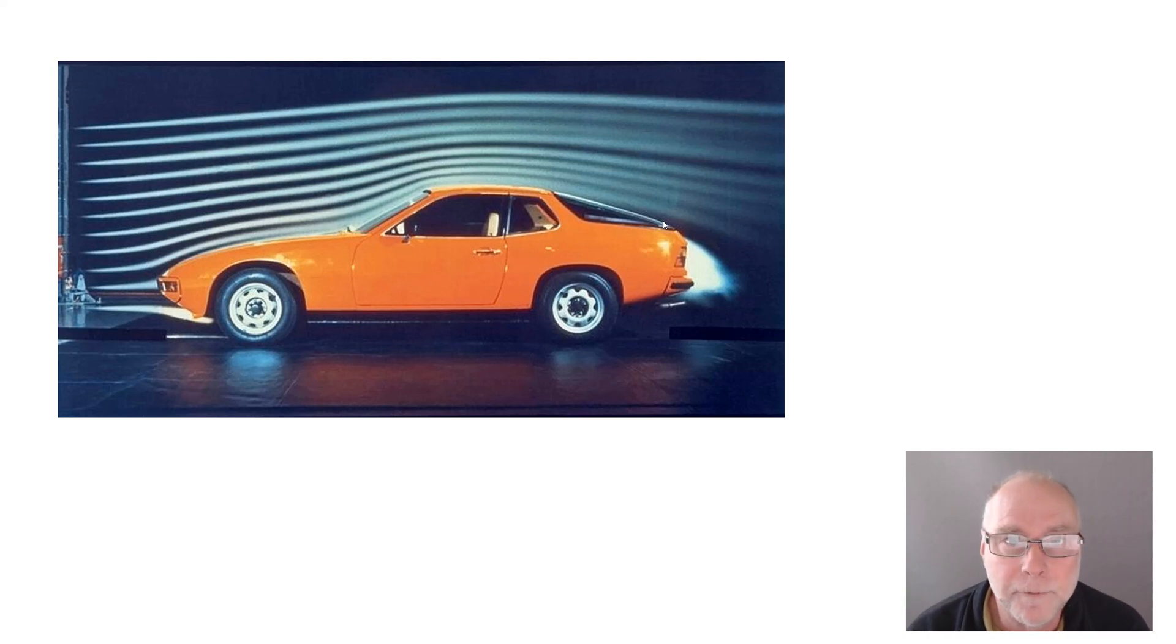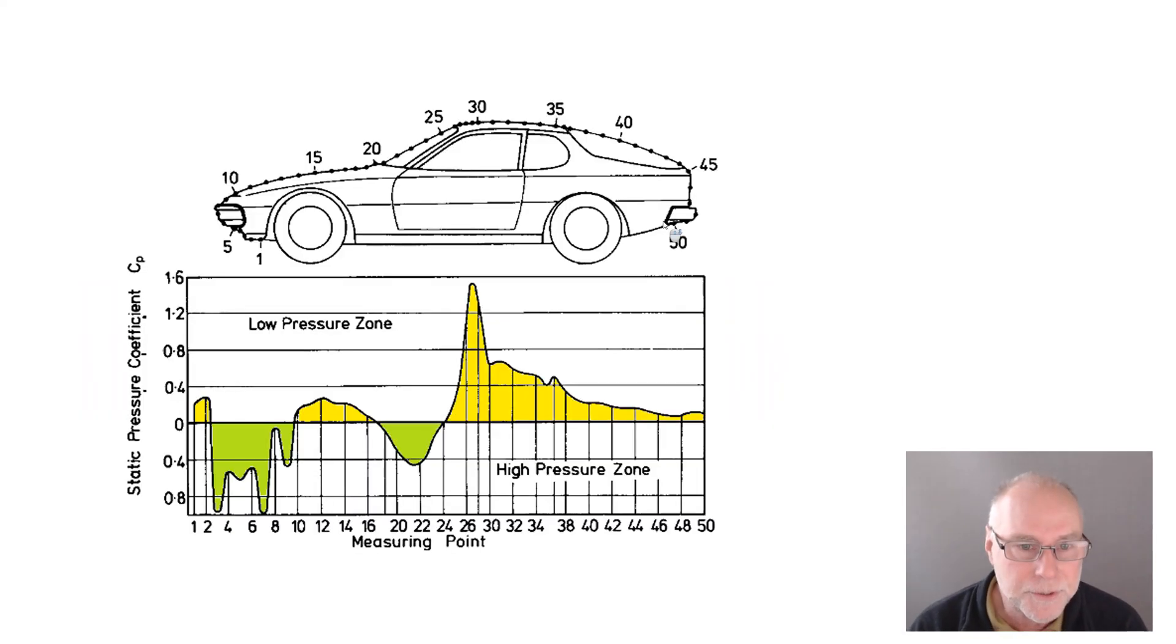We don't have to take my word for it, because we actually have a pressure plot showing surface pressures on the top of the car. We can see here, we've got numbers 1, 5, 10 going all the way to 50. And then here, they correspond to these numbers going across the bottom axis of the graph.